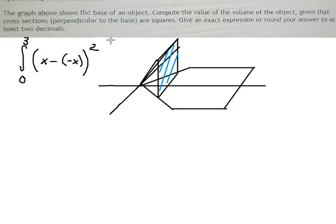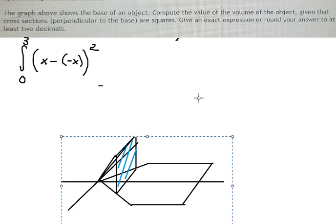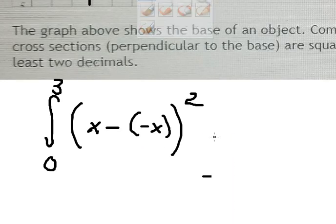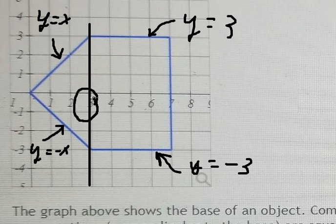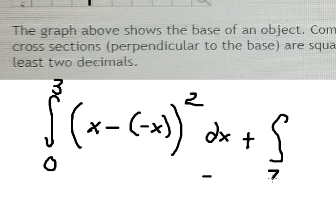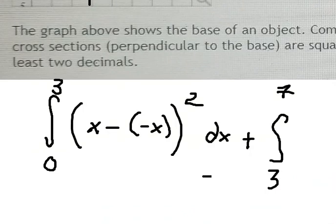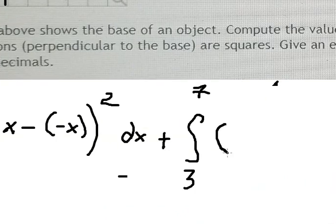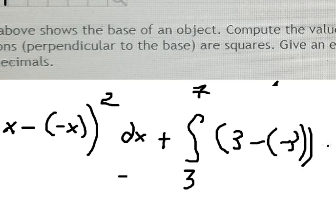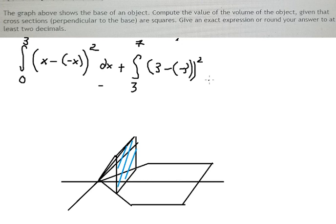Now let's go to the second one. We start from 3 to 7, so we have the integral from 3 to 7. The side length here is 3 minus negative 3, everything to the power of 2, times dx.